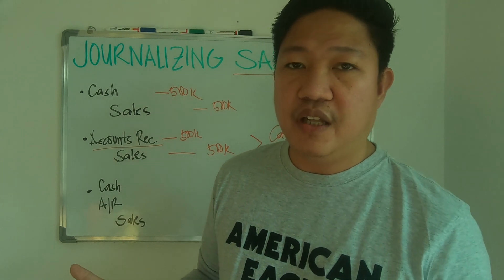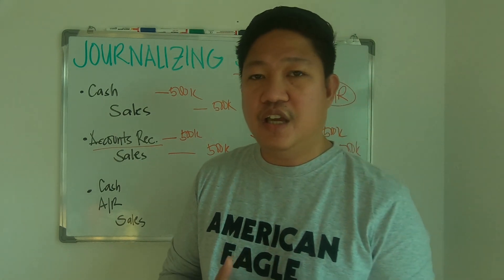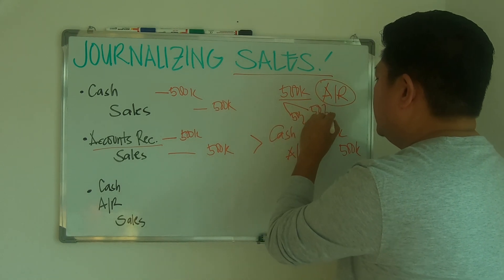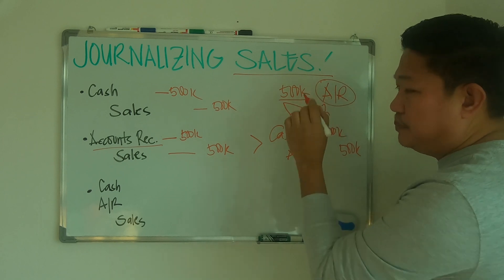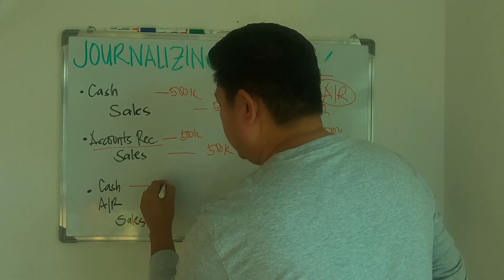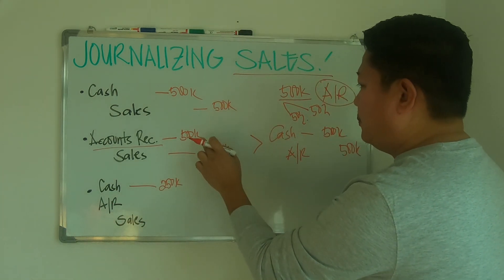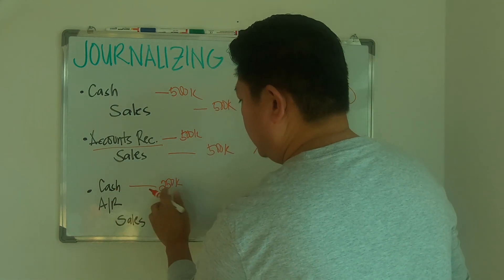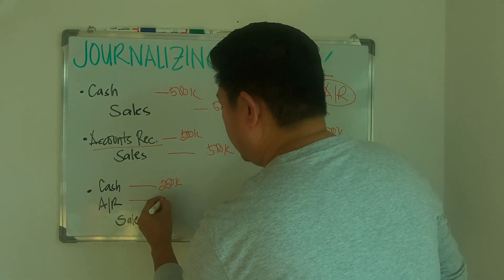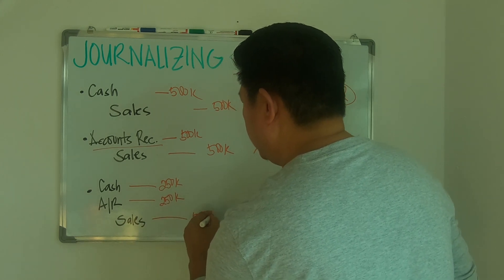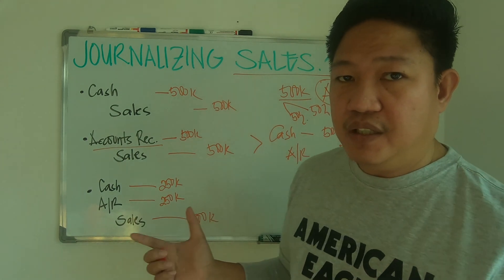The receivable will be payable in due time, let's say in 30 days. So how do you journalize this kind of mixed transaction? You debit cash of 250,000 — this is 50% of 500,000 sold in cash — and debit accounts receivable of 250,000 for the other 50%.